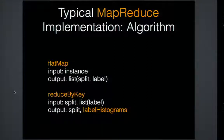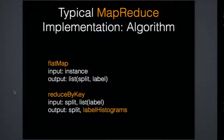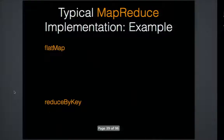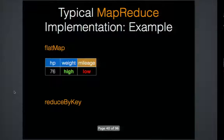Our first implementation was a map-reduce implementation where the map operation — or flat map in Spark terminology — takes an instance of training data as input and outputs a list of split-label combinations for all the splitting conditions it satisfies. After the shuffle, during the reduce operation — or reduce-by-key in Spark terminology — we take the split and the list of corresponding labels and produce the label histograms for that split.